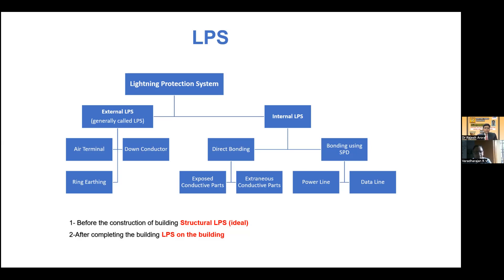When you take the earthing or the lightning protection system for the building, before construction, if you make use of the structural steel of the building — which is ideal — it doesn't involve any extra material and the life is equal to the life of the building. Whereas after completing the building, if you install a lightning protection system, say for example in a refinery or petrochemical plant, you put a copper air terminal down conductor — you don't know the next day if it is available or if somebody has cut and stolen it. These problems are not there when you use the structural steel of the building as a lightning protection system.